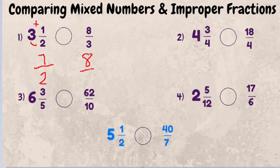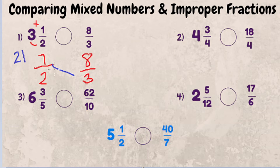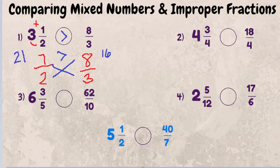And over here is eight thirds. By using a concept called cross multiplication, we can figure out which one is larger by multiplying the numerator of one fraction times the denominator of the other and vice versa. So seven times three gives us 21 — you always put the result next to the numerator you're multiplying by. Then two times eight gives us 16. Since 21 is larger than 16, three and a half is larger than eight thirds.